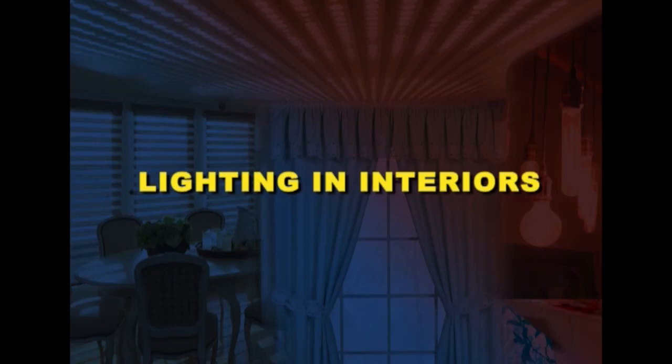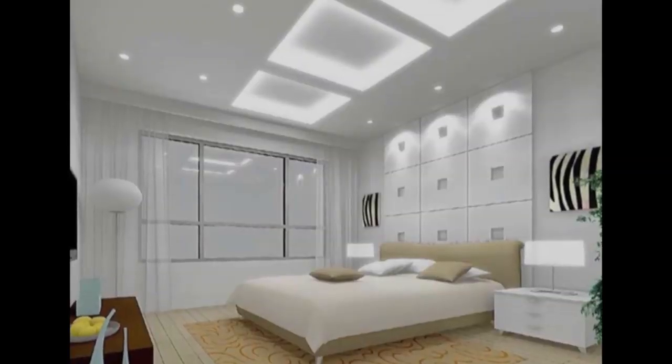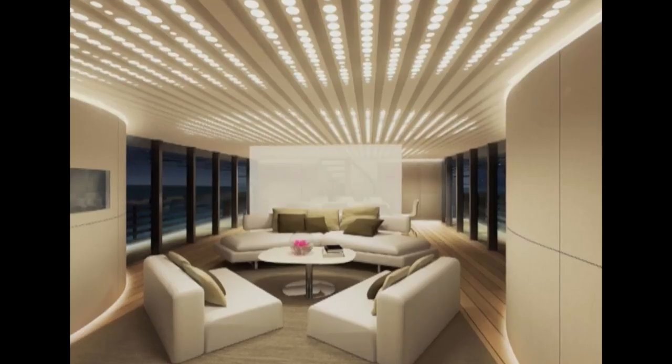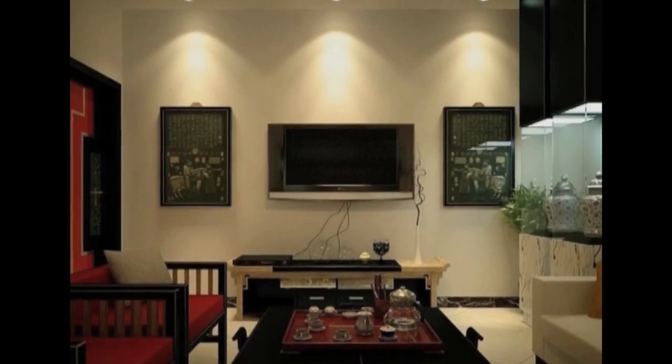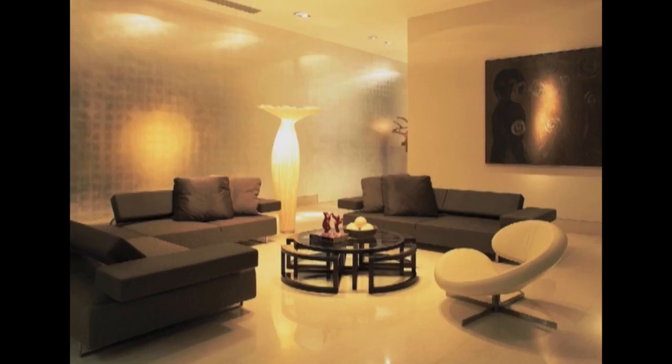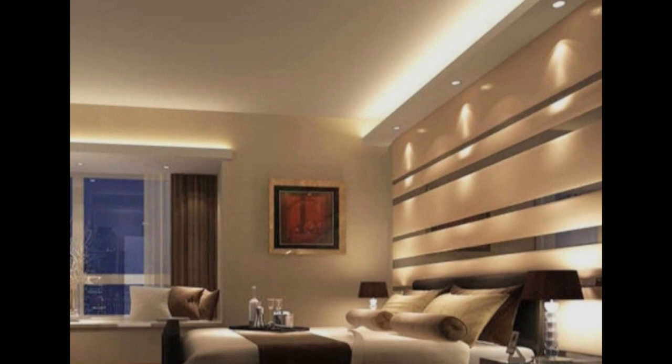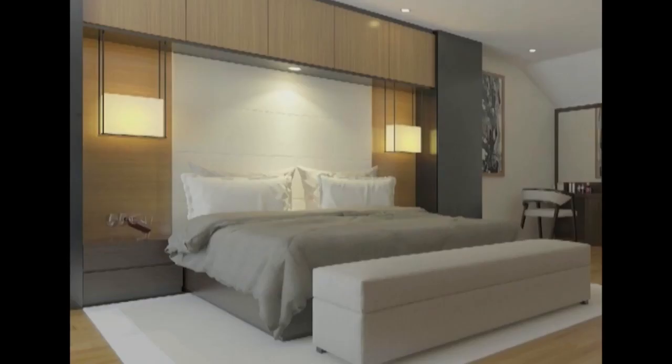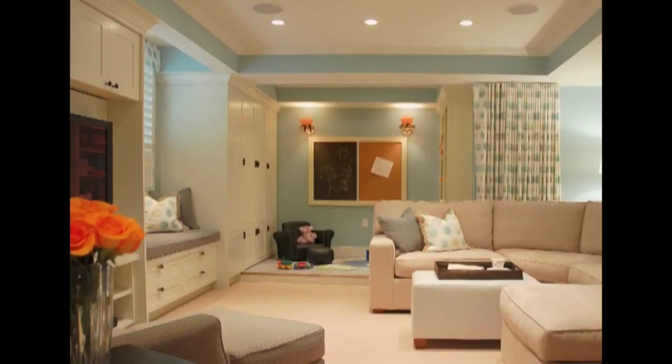Let us now have a look at lighting in interiors. Lighting or illumination is the deliberate use of light to achieve a practical or aesthetic effect. Lighting includes the use of both artificial light sources like lamps and light fixtures as well as natural illumination by capturing daylight. Lighting is an important aspect of interior design as it enhances the aesthetic appeal and creates the mood and ambience of a living space. Proper lighting is an important element of decorating your home.